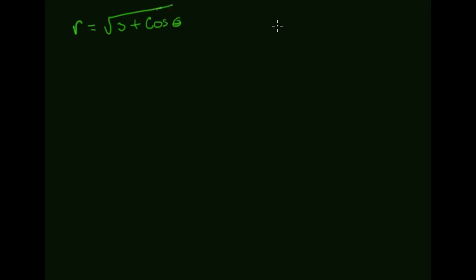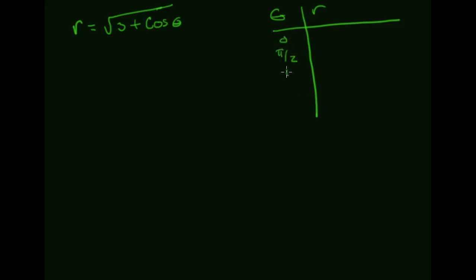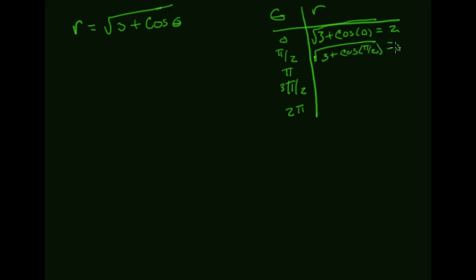We need to get an idea of what's going on with this graph, so I'm going to build a small table with theta and r, picking some principal points. We'll use zero, pi over two, pi, three pi over two, and two pi. When theta is zero, we get the square root of three plus cosine of zero, which is the square root of four, which is two. At pi over two, that's just going to be the square root of three.